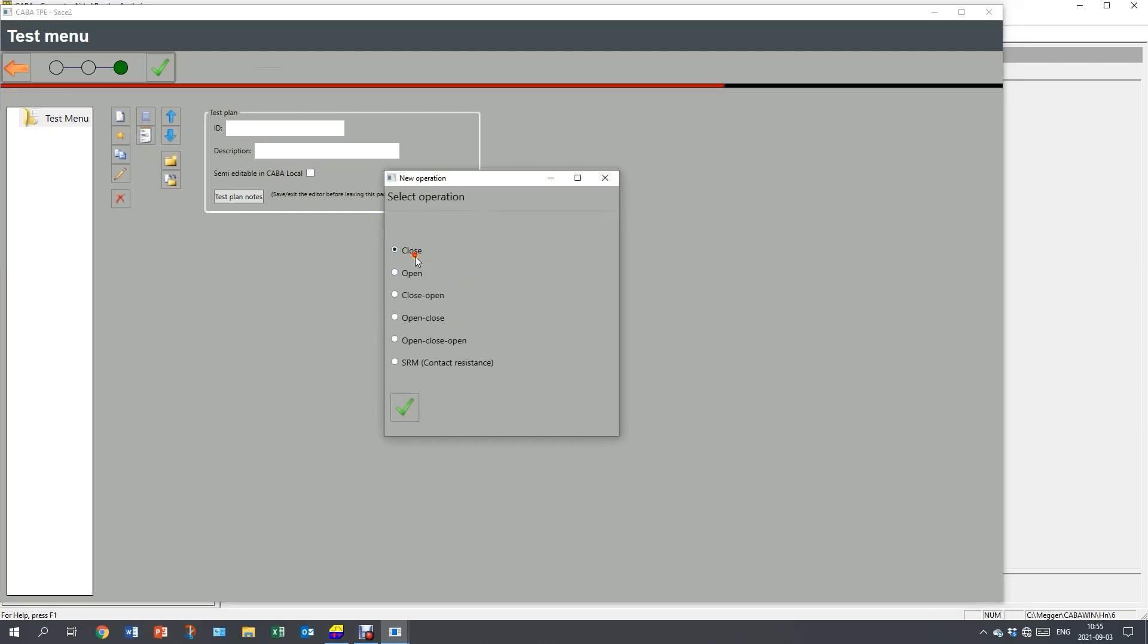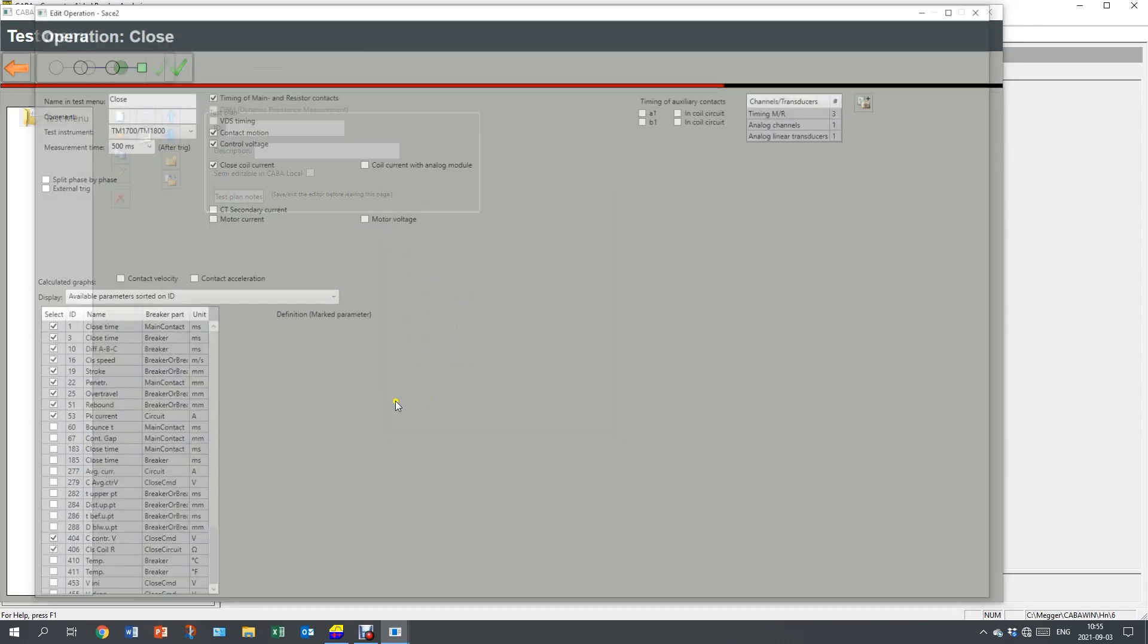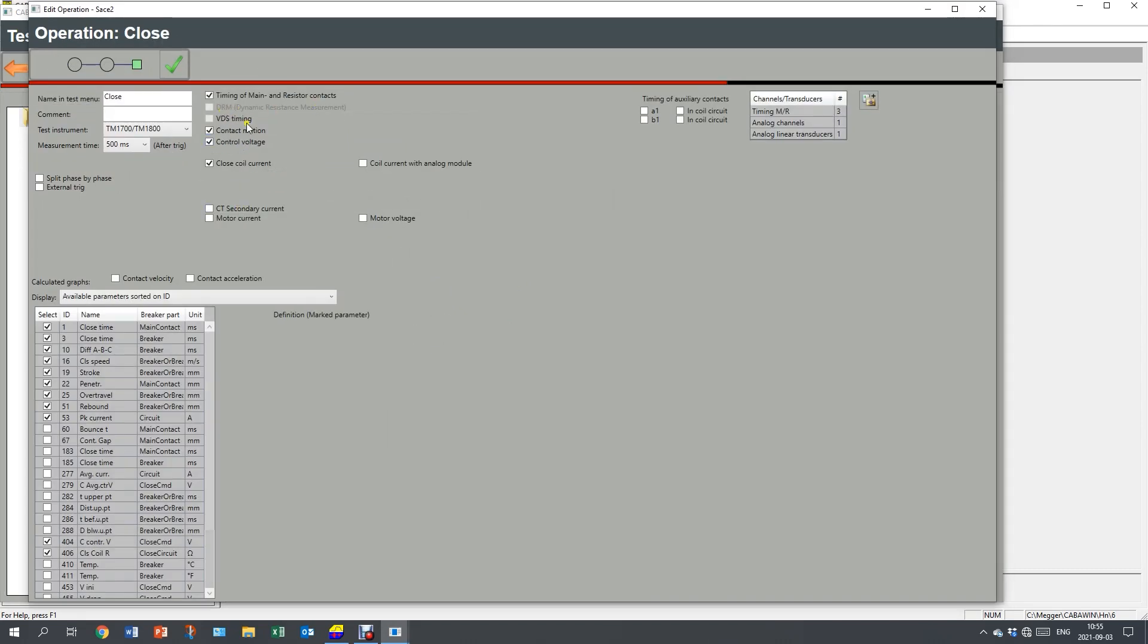I want to close operation. And I want to measure motion, voltage and current. And my auxiliary contacts. And I'm going to use the control circuit to measure it. So it's in the coil circuit.